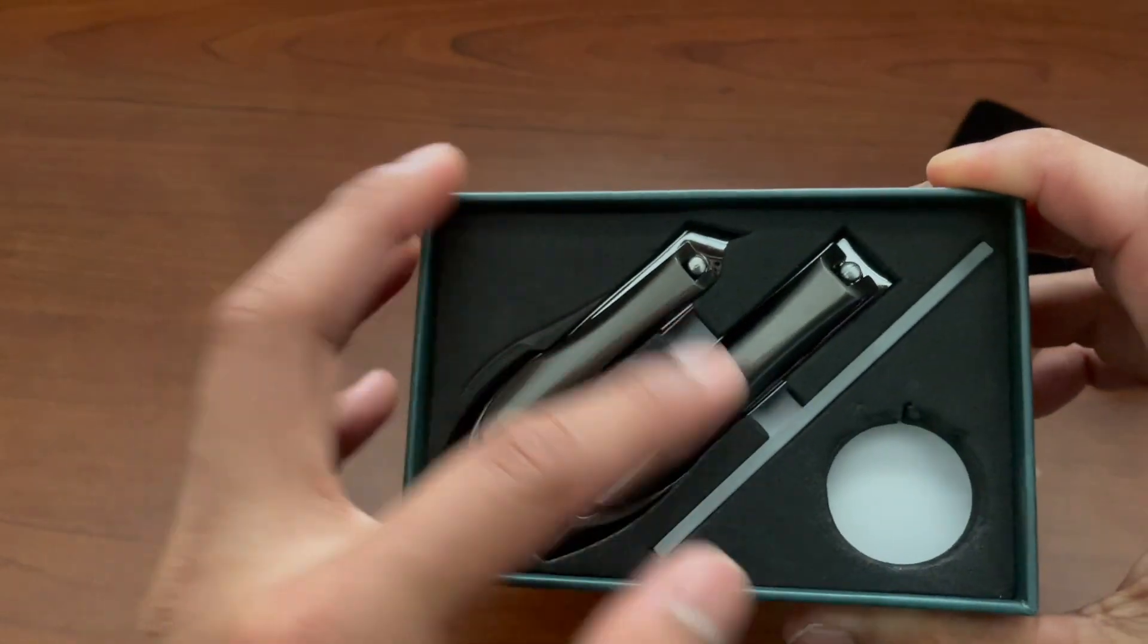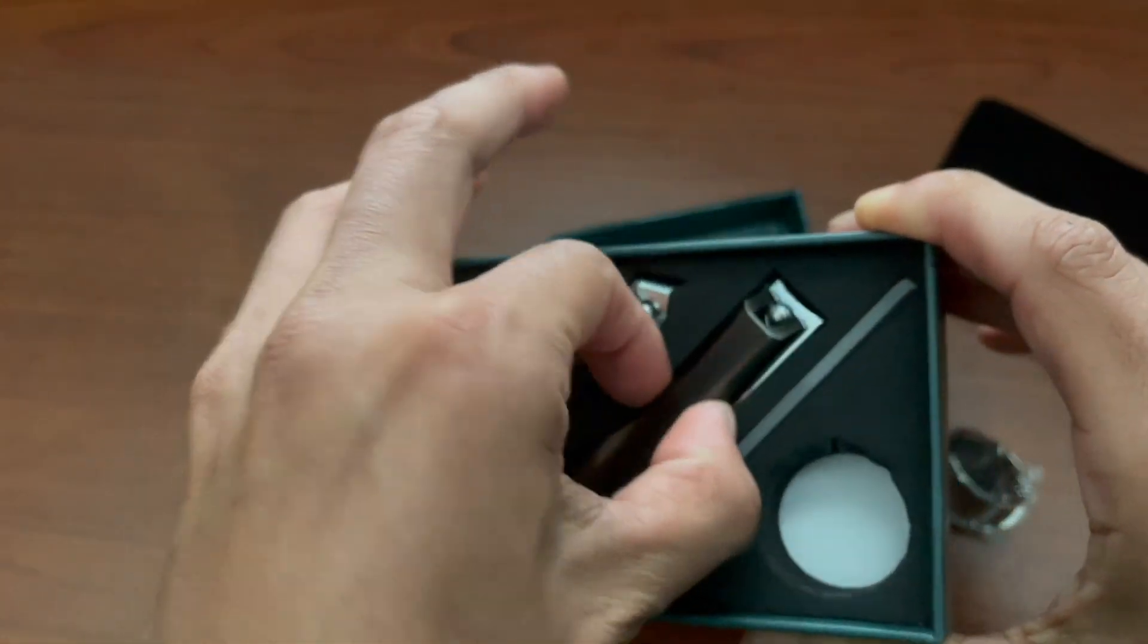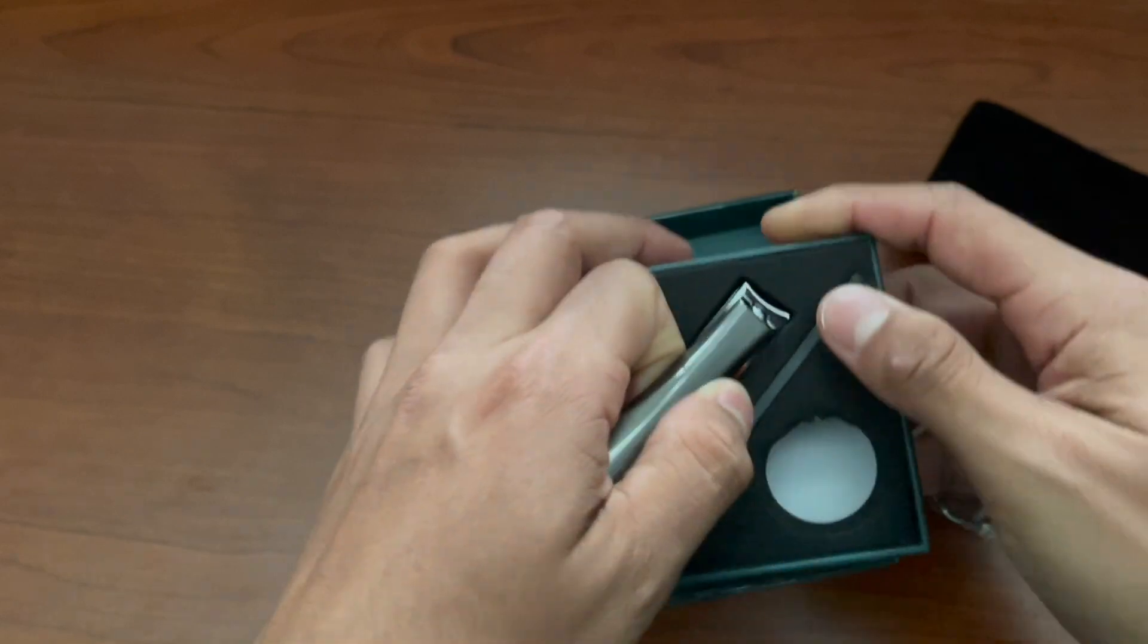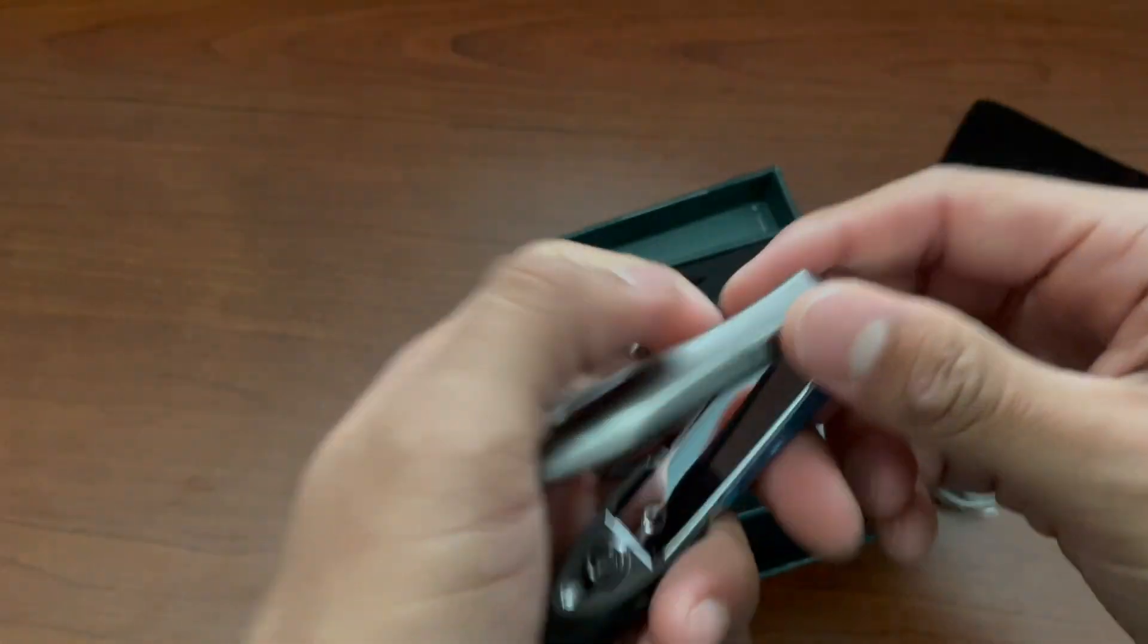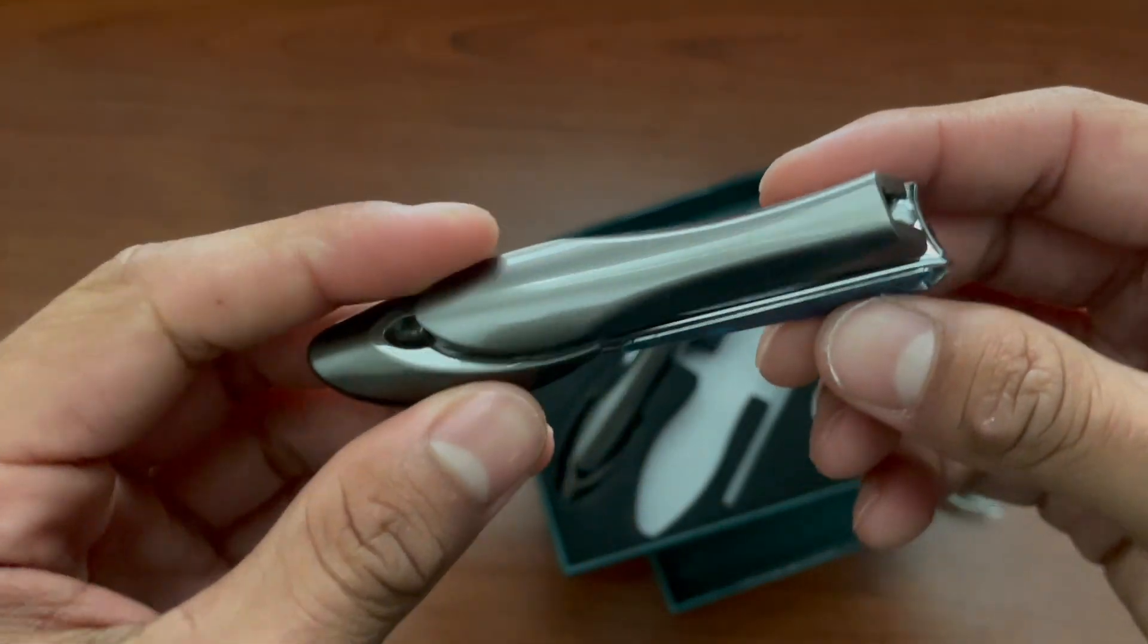Now we have two sets of nail clippers. Right here is the larger piece. There it is.